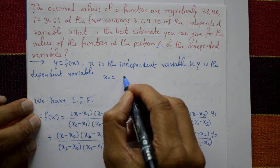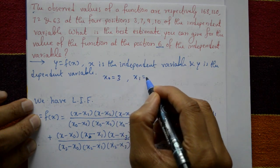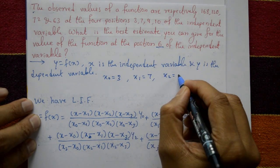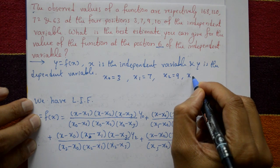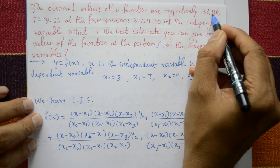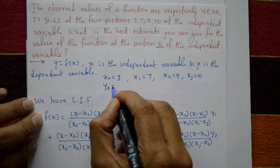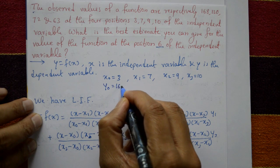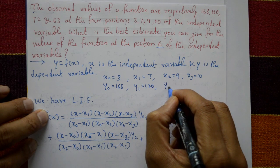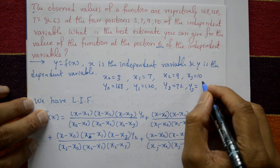So x0 is equal to 3, x1 is equal to 7, x2 is equal to 9, and x3 is equal to 10. And 168, 120, 72 and 63 — these are dependent variables. Means y0 is equal to 168, y1 is equal to 120, y2 is equal to 72, and y3 is equal to 63.